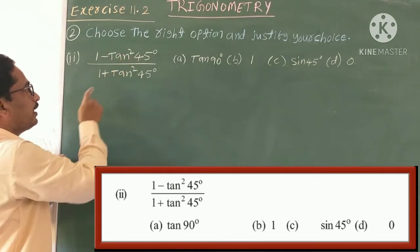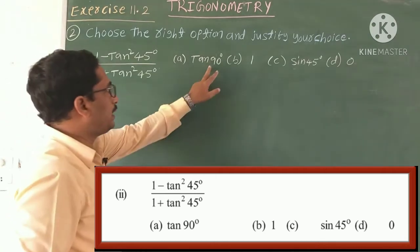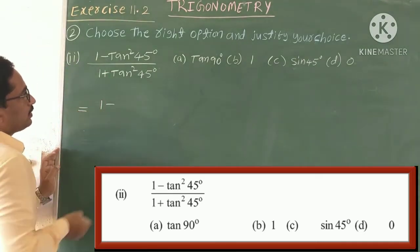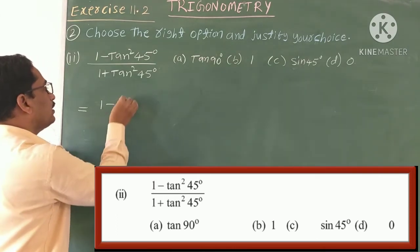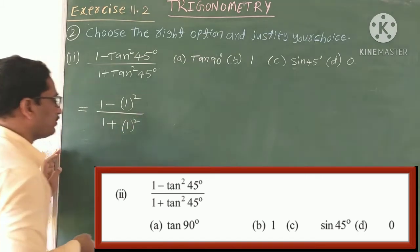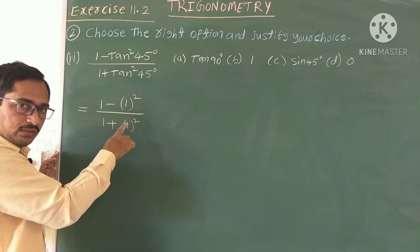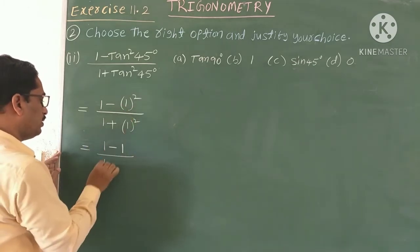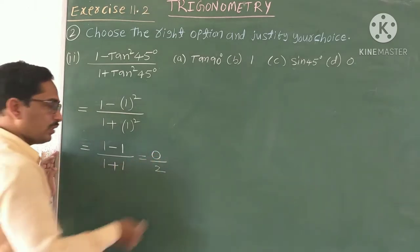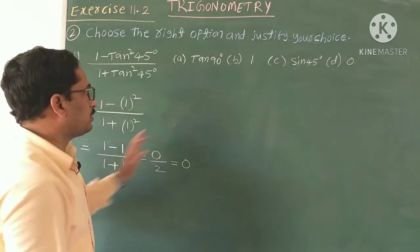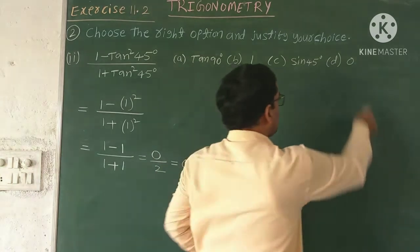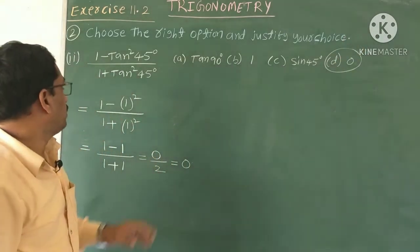Second question: (1 − tan²45°) divided by (1 + tan²45°). Tan 45 = 1, so numerator = 1 − 1² = 0, denominator = 1 + 1² = 2. Value = 0 by 2 = 0. Checking the options: tan 90 is undefined, sin 45 = 1/root 2, so the correct answer is D, which is 0.